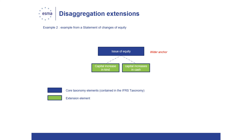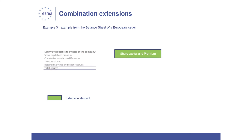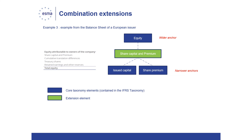It is not necessary to anchor the two extension taxonomy elements to narrower elements in the ESEF taxonomy. The RTS on ESEF further requires that where an extension taxonomy element combines a number of elements of the ESEF taxonomy, issuers also anchor that extension taxonomy element to each of the elements in the ESEF taxonomy it combines, except where these elements are reasonably deemed insignificant. In the example, the extension taxonomy element share capital and premium is a combination of two elements existing in the core taxonomy: issued capital and share premium. Therefore, the issuer needs to anchor the extension both to the wider base taxonomy element equity and to the two narrower core taxonomy elements issued capital and share premium, unless one of these elements is deemed to be insignificant.